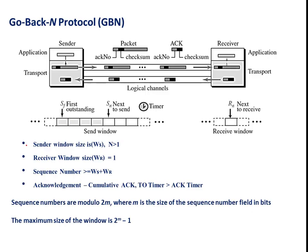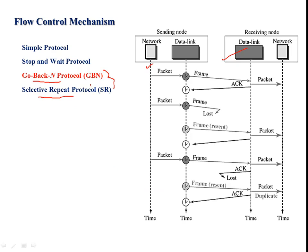This is the concept of Go-Back-N protocol. Key points: the sender window size is always greater than 1; the receiver window size in Go-Back-N is equivalent to 1; the sequence number is the addition of sender window size and receiver window size to avoid duplicates; and cumulative acknowledgement is efficient for traffic but not reliable because a single corruption leads to retransmission of a group of packets. In the next lecture we will see selective repeat protocol.